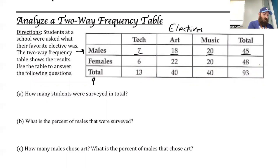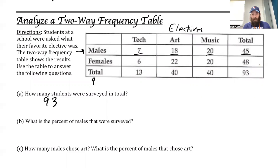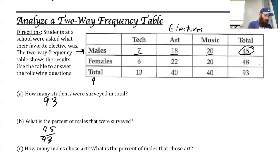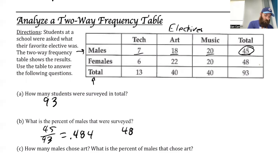So that's going to answer my first question: how many students were surveyed in total? 93. The next question is what percent of the students were male? We have 45 males, so we're going to take 45 divided by the total number of surveys, which is 93. That gives us the decimal 0.484. If I want to turn that into a percent, we multiply by 100, so that's 48.4% males were surveyed.